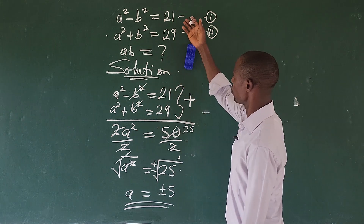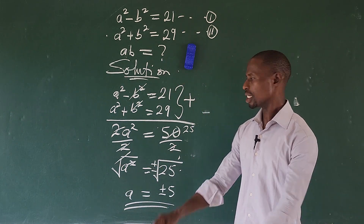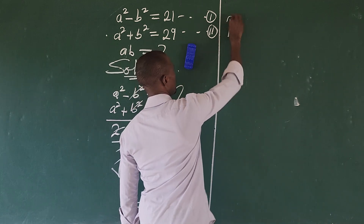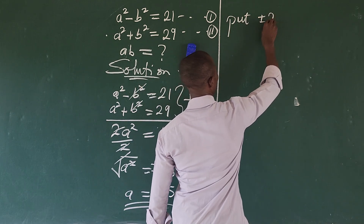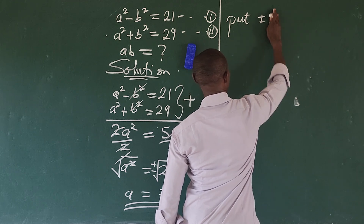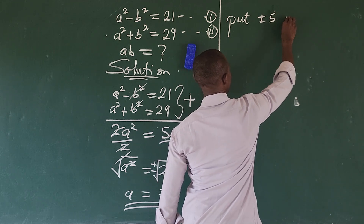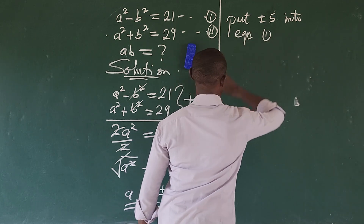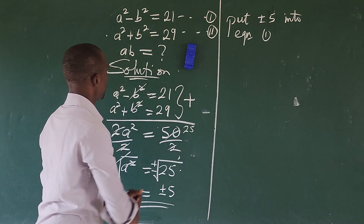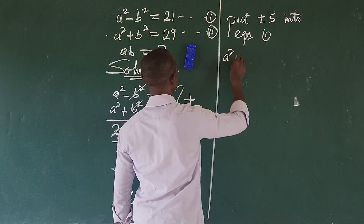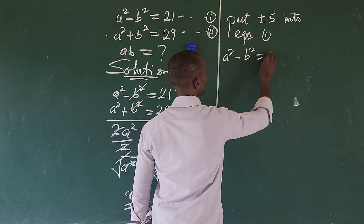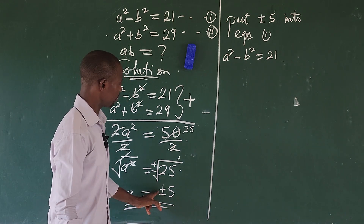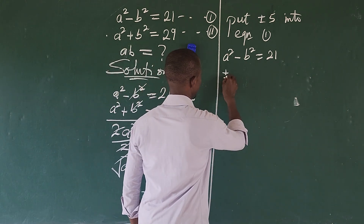Now we can find b by substituting the value of a into equation one or equation two. Let's substitute into equation one: a squared minus b squared equals 21. Our value of a is plus or minus 5.